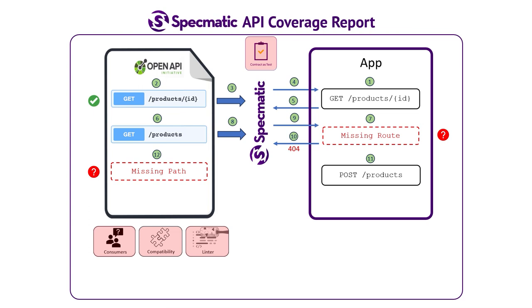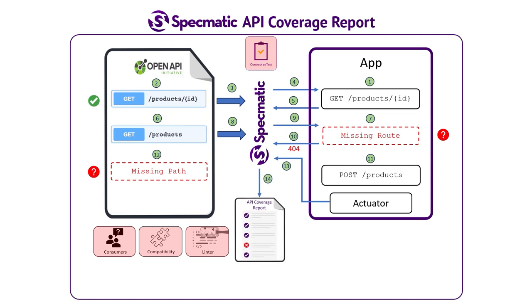This is exactly the problem that Specmatic's API coverage report solves. Specmatic can detect an application's endpoints and generate a comprehensive API coverage report. The API coverage report helps us identify any mismatch between the OpenAPI specification and the application early in the development lifecycle.